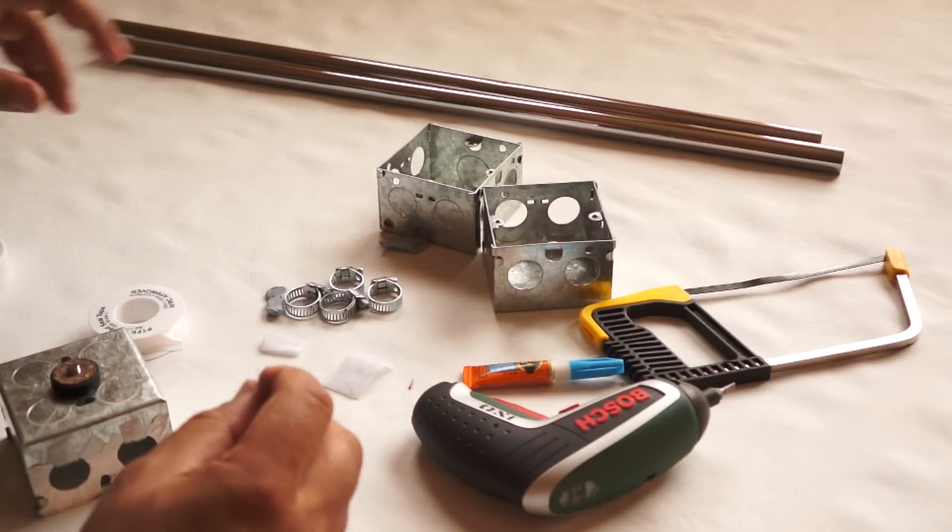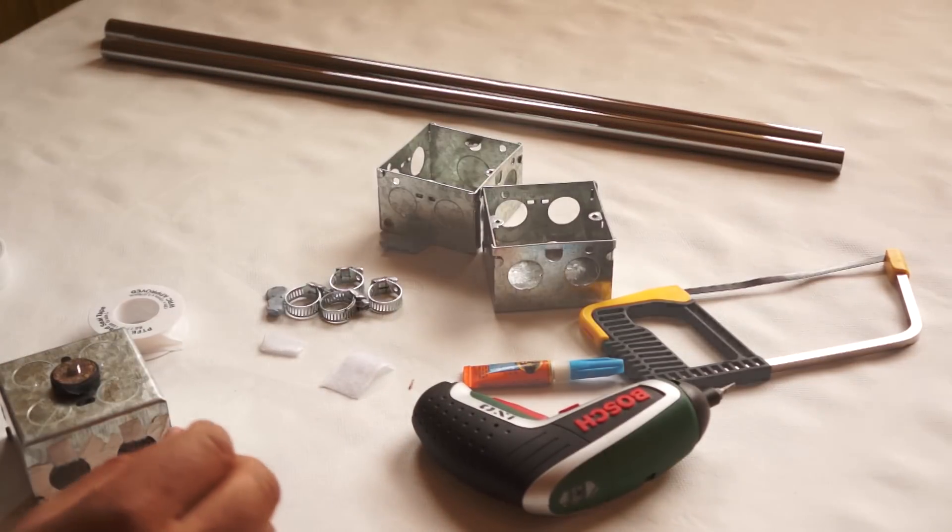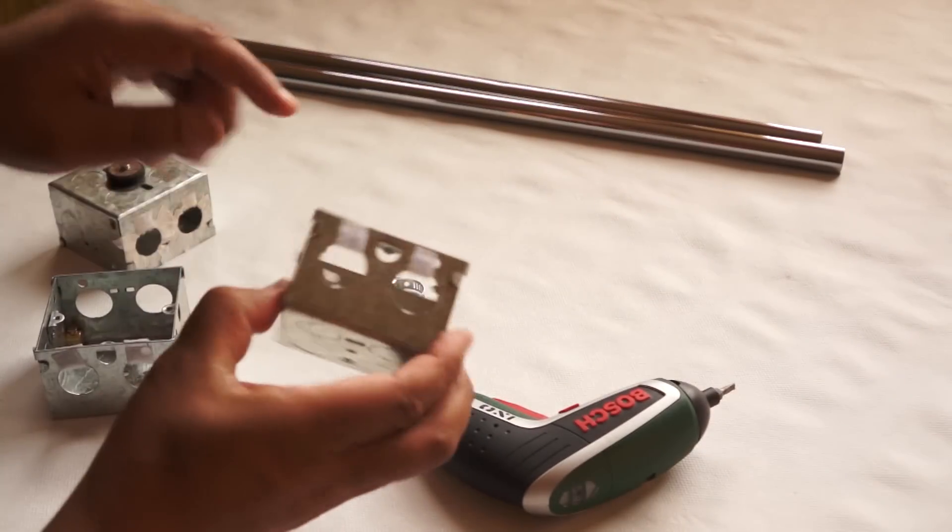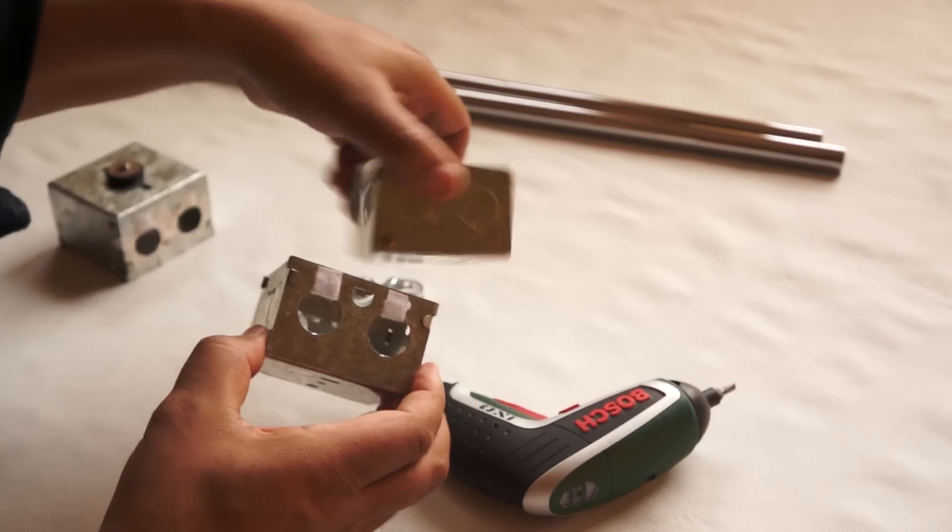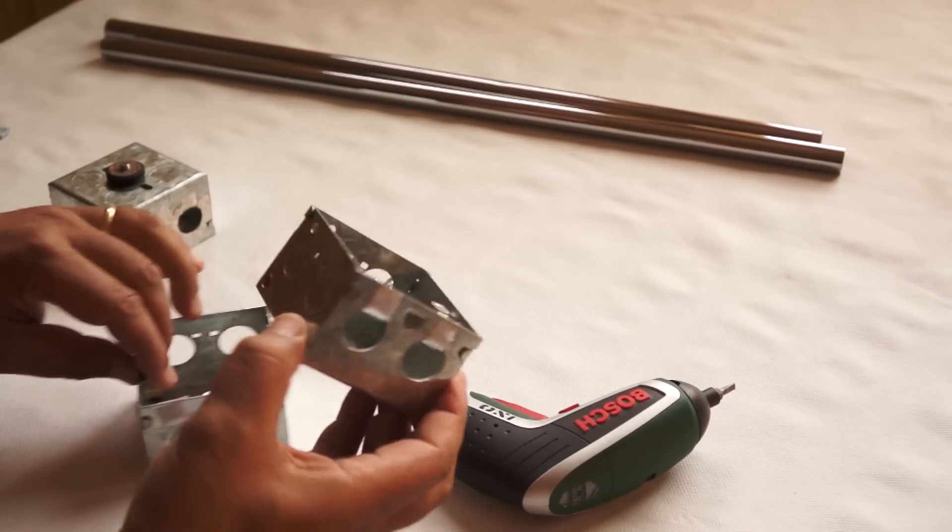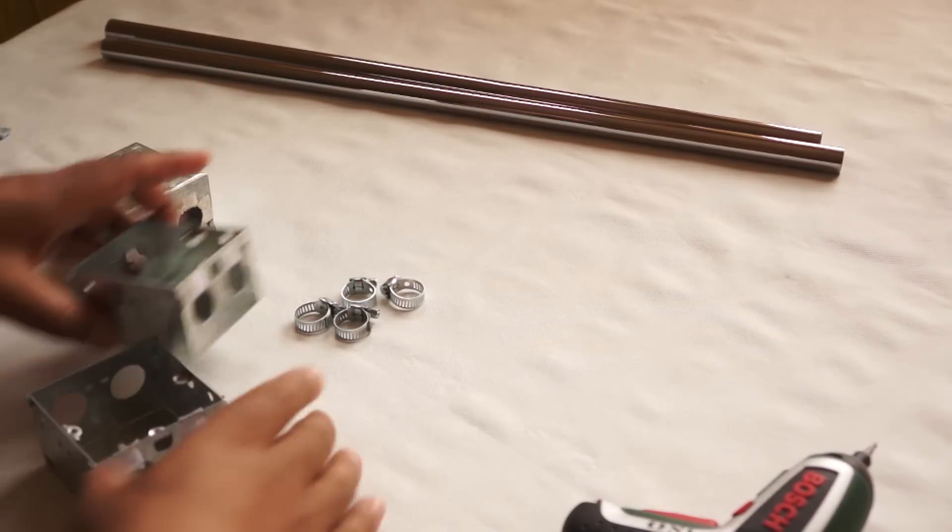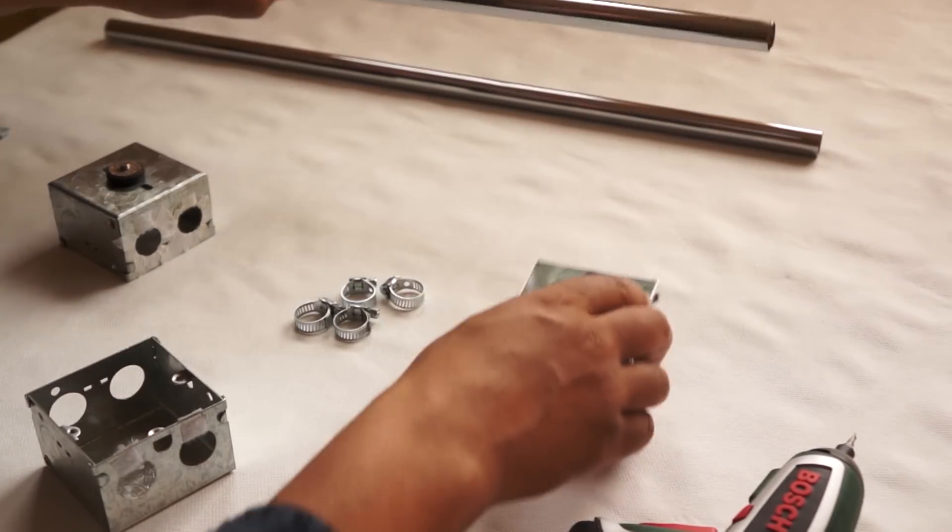So now you can see just on the entry side for the pipes on the end pieces, the piece of velcro. Now it's just time for the assembly which is the fun piece.